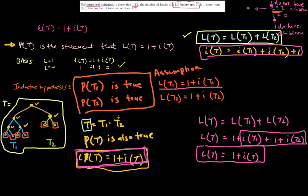So what I've done here is using structural induction: I assumed P(T1) and P(T2) to be true, where T1 and T2 are smaller subtrees. When I concatenate them I create a bigger tree T, and then I showed that P(T) is also true for this bigger tree by using the assumptions and the facts about L(T) and I(T) to show the proposition P(T) holds.